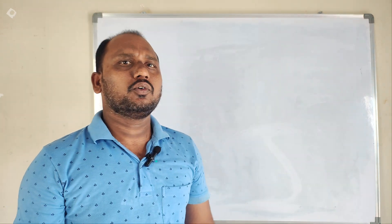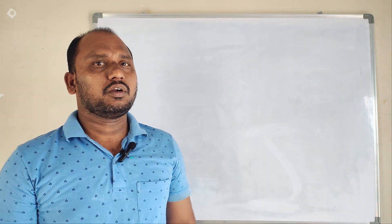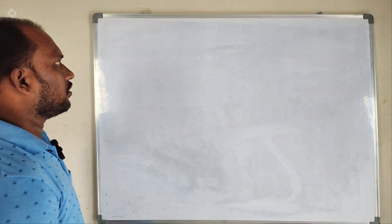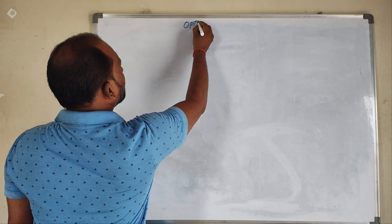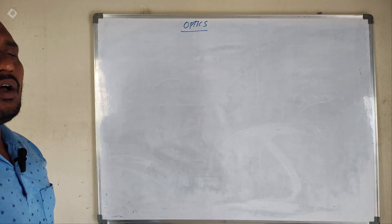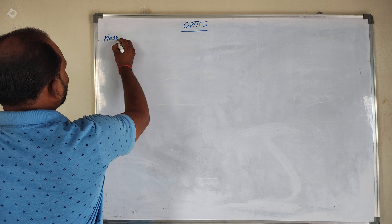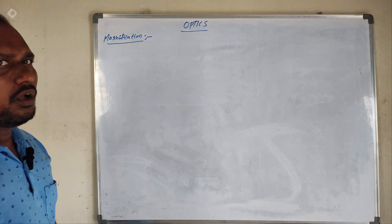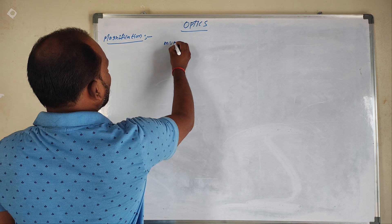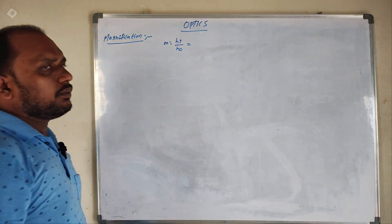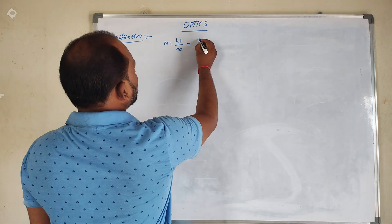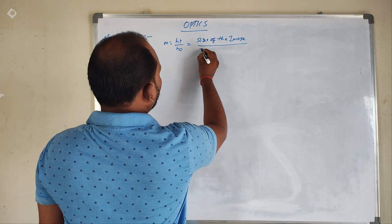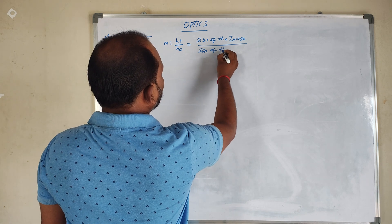Good evening everyone. Today we will be talking about one of the premier and very important concepts that people are struggling to understand in many cases — that is magnification in optics. So generally, magnification is M = HI / H0, which means size of the image divided by size of the object.